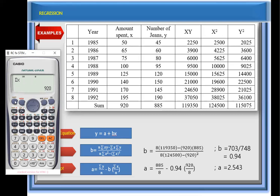Next is, again, press shift, stat. And we're going to choose reg or regression, stands for regression, number five. As we can see, we have a and b there. So if you want to solve for a, press one and then equals. So we got 2.543.